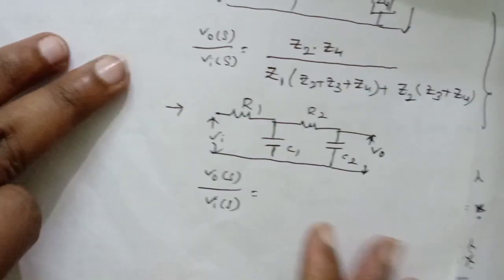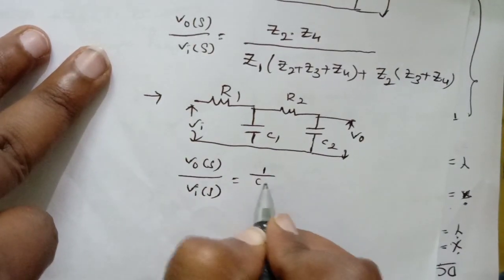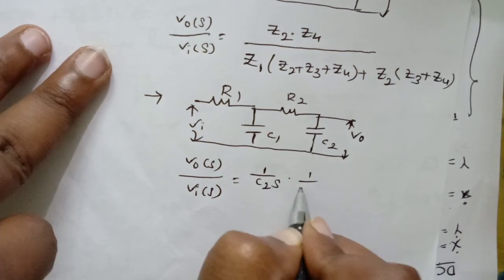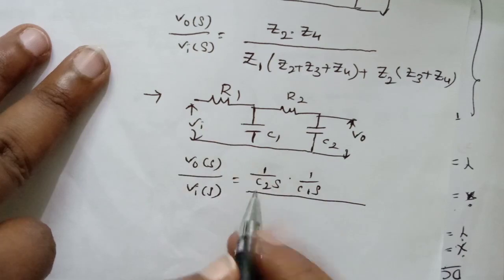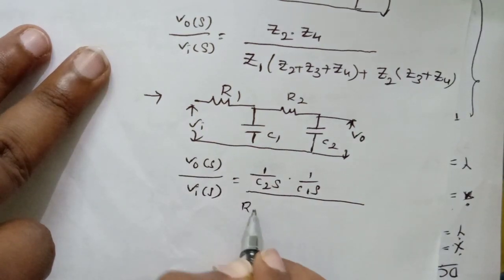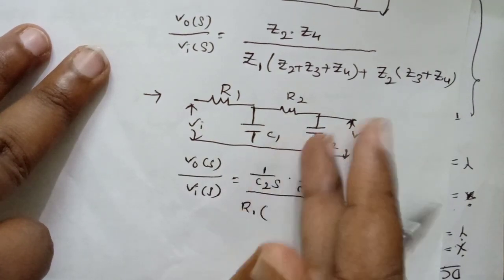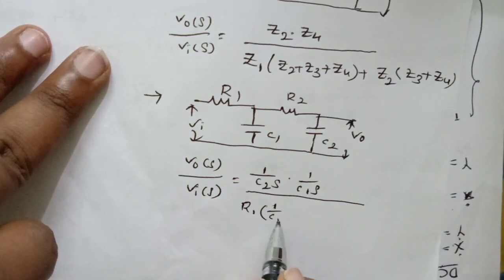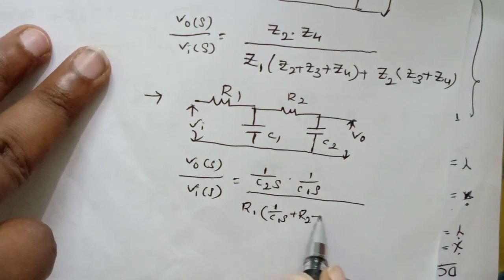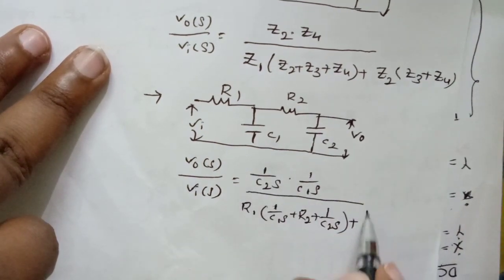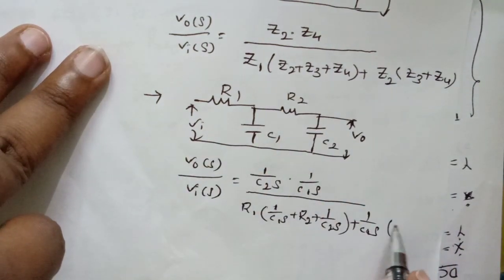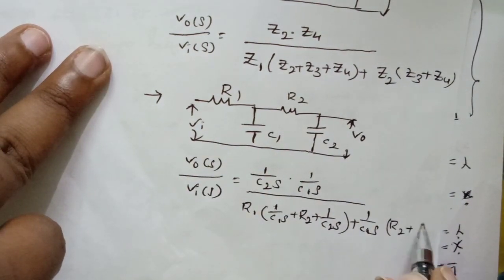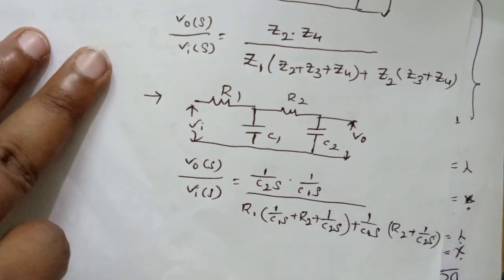The shunt elements give us 1/(C2s) times 1/(C1s) in the numerator. Coming from the left side: R1, then add all three elements — 1/(C1s) + R2 + 1/(C2s). Next, add the remaining two right-side elements: R2 + 1/(C2s). That gives the complete transfer function for this two-loop RC network.